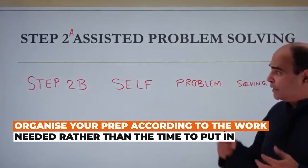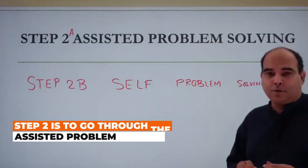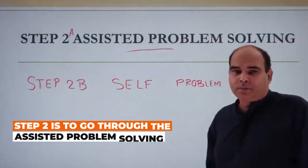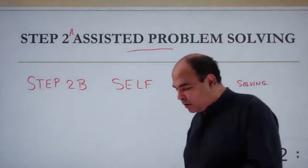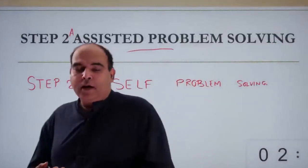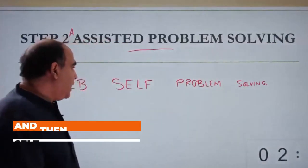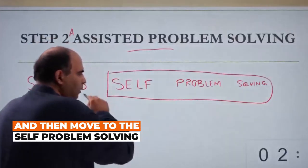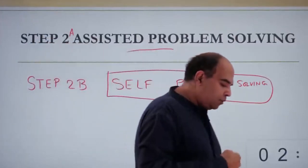Steps 2 and 2B comprise assisted problem solving—going through question banks where you take assistance from teachers to clear doubts—and then moving to self problem solving. I've talked about the number of questions required on every chapter for self problem solving.